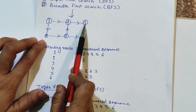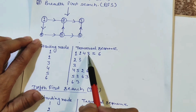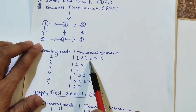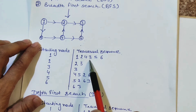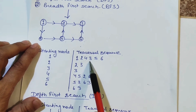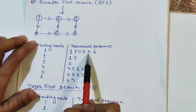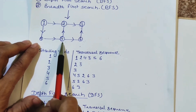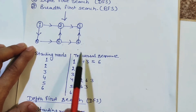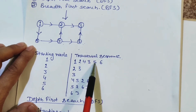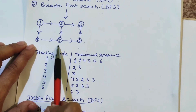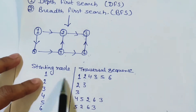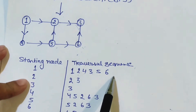Now, the neighbor of two is three. Then we look at the neighbor of two: five. The neighbor of four is also five. Then, the neighbor of five is six. First level traversal complete.